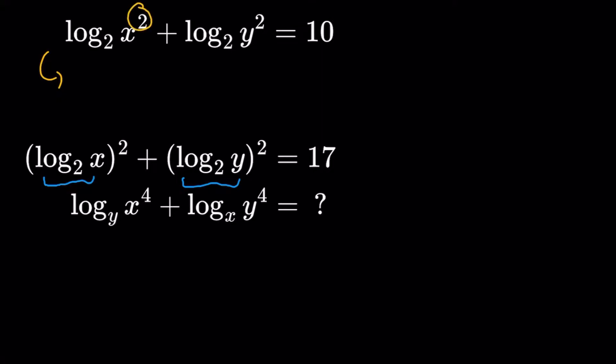And I could manipulate this one into something similar to the second one. So, with the property of exponents that I could bring this one to the front, so I'll have 2 logarithm of x with base 2 plus 2 logarithm of y with base 2, that's going to be equal to 10. I could divide both sides by 2, and I'll get logarithm of x with base 2 plus the logarithm of y with base 2, that's going to be equal to 5.